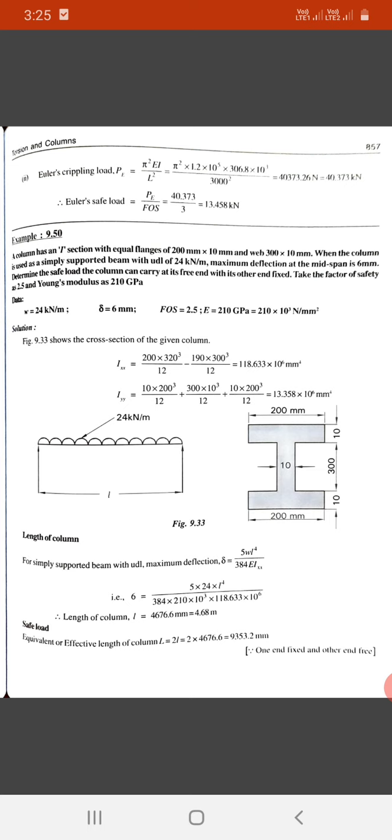Determine the safe load the column can carry at its free end if the other end is fixed. Take the factor of safety as 2.5 and modulus of elasticity as 210 GPa. Given UDL w is 24 kilonewton per meter.